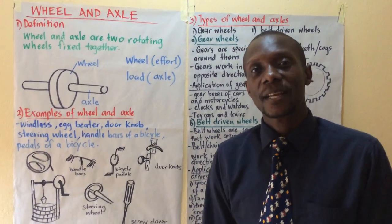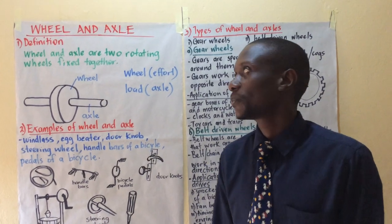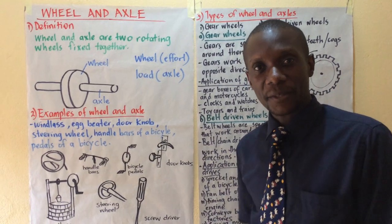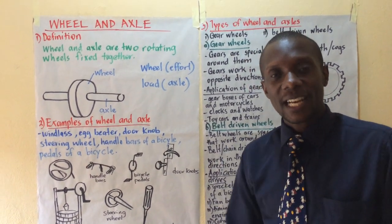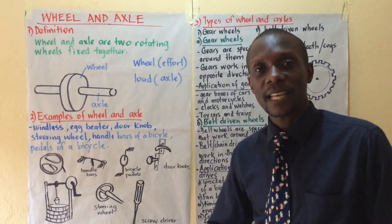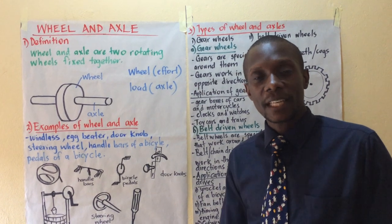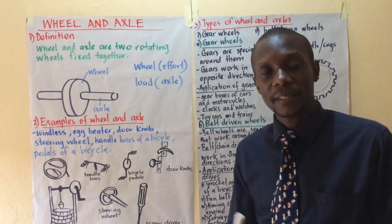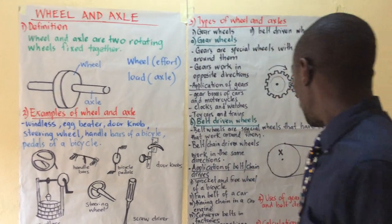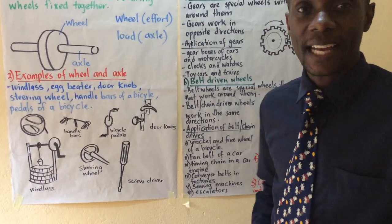Hello, I'm Simon and I'm going to take you through wheel and axle. We shall define the term wheel and axle, look at examples of wheel and axle, and classify wheel and axle. Wheel and axle are grouped into gear driven wheels and belt driven wheels. We shall see the importance of each and how they are applied, and then we shall also do some calculations on wheel and axle.